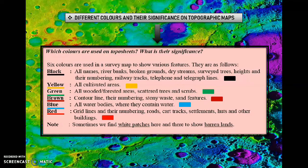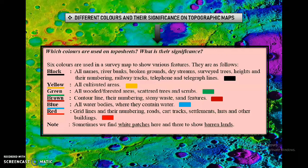The next color is red. Grid lines in your map are in red color — so grid lines and their numbering, roads, cart tracks, settlements, huts and other buildings like monuments, churches, temples, mosques etc. will be red in color. One important thing to remember: white patches in your map signify barren land — land which is not suitable for cultivation. Sometimes you find white patches in a river too, which signifies barren land taken as an island in the river.